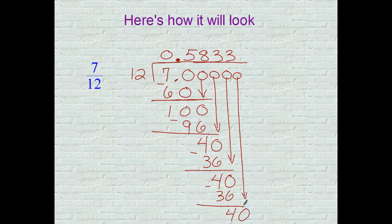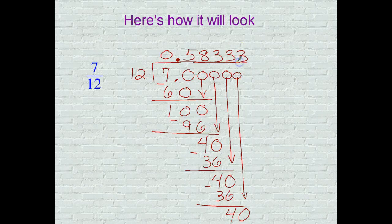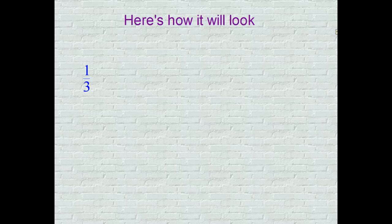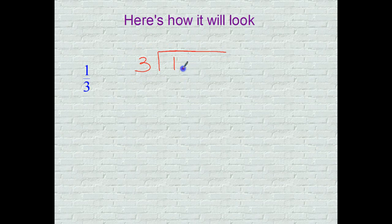Do you see what's repeating here? It keeps bringing a remainder of 4, and I carry my 0s down. I keep getting this 40, so the repetitive number is going to be a 3. Only put a bar over the 3, because the 5 and the 8 are not repeating themselves. Final answer.